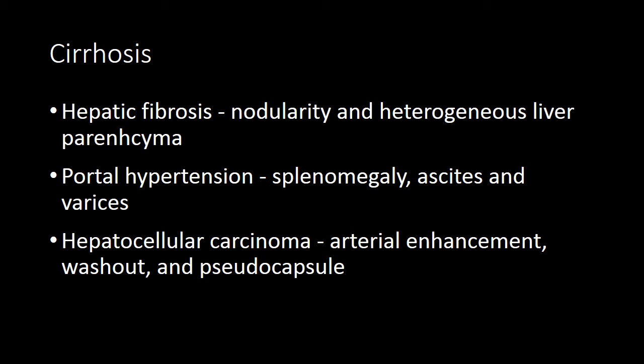In summary, cirrhosis is the result of hepatic fibrosis and manifests as surface nodularity and heterogeneous liver parenchyma. Cirrhosis can be complicated by portal hypertension, which is often evident by splenomegaly, ascites, and varices. Hepatocellular carcinoma typically arises in cirrhotic livers, and we can confidently make a diagnosis of hepatocellular carcinoma when we see arterial enhancement, washout, and pseudocapsule in a cirrhotic liver.